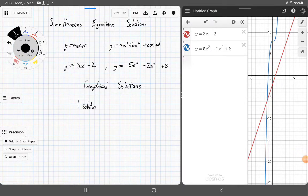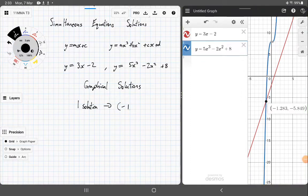And that one solution is negative 1.283, negative 5.849. Obviously, these are approximate, there's probably a lot more decimal places after that. But this gives us a pretty easy way of doing this. Alrighty.